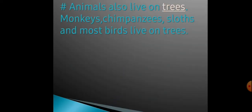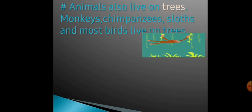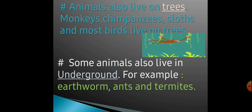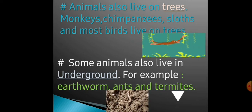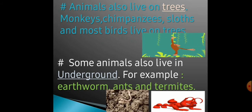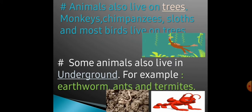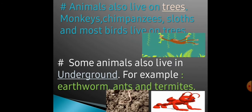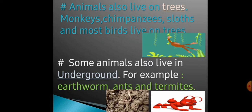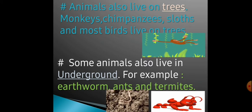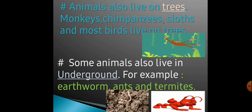Animals also live on trees. Monkeys, chimpanzees, sloths and most birds live on trees. Jo monkeys hain, chimpanzees hain, woh sab trees pe rehte hain. Some animals also live underground. For example, earthworms, ants and termites live underground. Matlab jo koi koi animals hote hain, woh zameen ke andar rehte hain.